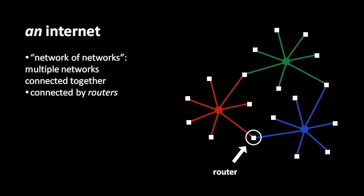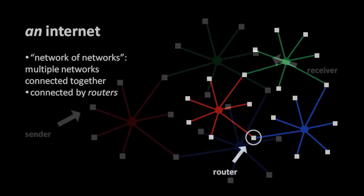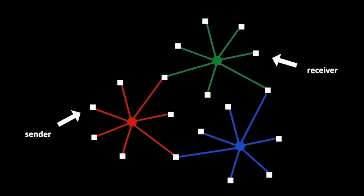Here in our diagram we're depicting three networks — one green, one red, and one blue — and the circled system here is the router connecting the red and blue networks. The purpose of an internet is really just the same as a network: we want all of the systems on this internet to be able to send data to any other. For example, if I wish to send data from this host on the red network to this host on the green network, then the data can get there by passing through the router which connects the two networks.